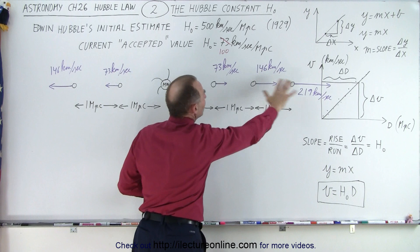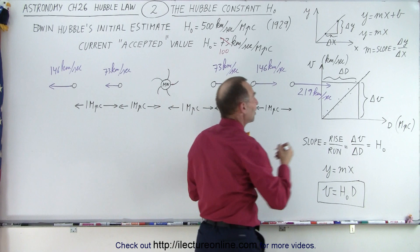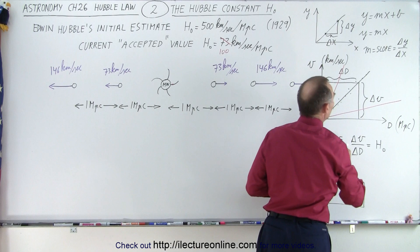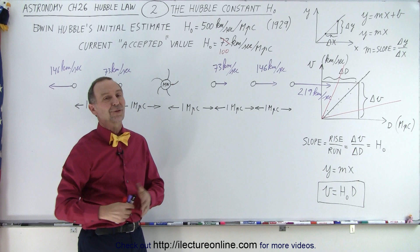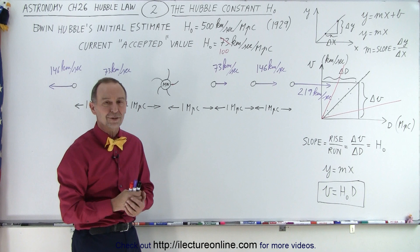So again, notice that if this number changes, the estimated distance will change because the slope will change. If we have a steeper slope, things will not appear so far. If we have not so steep a slope, things will appear to be farther. So that's why it's so important to find the accurate value of the Hubble constant, so we can really rely on determining the distance to all the galaxies in the universe. And that is what it means when we talk about the Hubble constant.